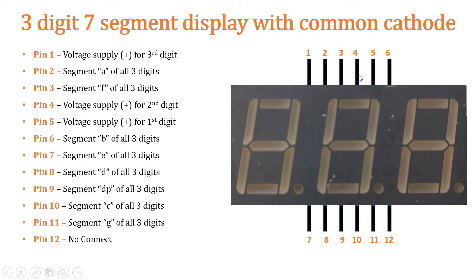Then we have pin 4, which is for providing the voltage supply for the second digit. Then we have pin 5, which is for the voltage supply for the first digit. Then we have pin 6, which is for providing ground to segment B. So this is segment B of the third digit, this is segment B of the second digit, and this is segment B of the first digit.